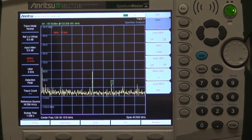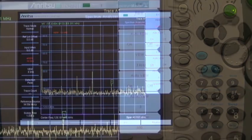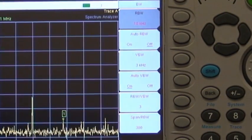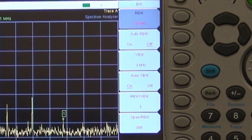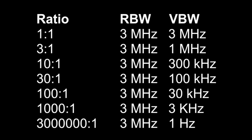The default ratio of RBW to VBW is 3, meaning that the resolution bandwidth is 3 times the video bandwidth. You can change the ratio from 1 to 1 all the way to 3 million to 1. The higher the ratio, the narrower the video bandwidth for a given resolution bandwidth.